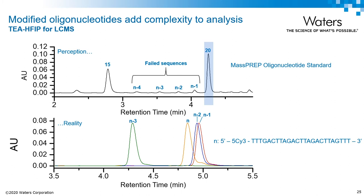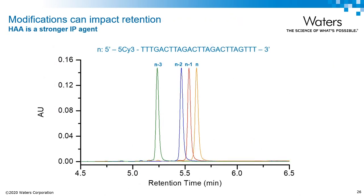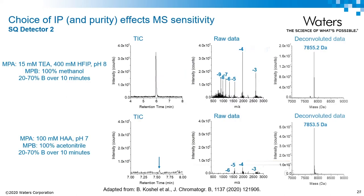Here we have a 25-mer species with a Cy3 di-conjugate, and the N-1, N-2, and N-3 impurities were all synthesized and spiked into the sample at equal amounts. In this case, we can see that the failed sequences co-elute and have a later elution time than the main peak. By using hexyl ammonium acetate, which is a stronger ion pairing agent than TEA-HFIP, the separation once again becomes length-based. Hexylamine provides more efficient ion pairing through more effective adsorption to the reverse phase stationary phase than TEA due to the length of the alkyl chain. However, the problem with using HAA in place of TEA-HFIP is that it is not MS compatible, and the same sample load is barely distinguishable from the noise in HAA.